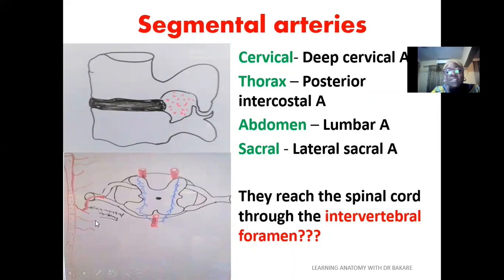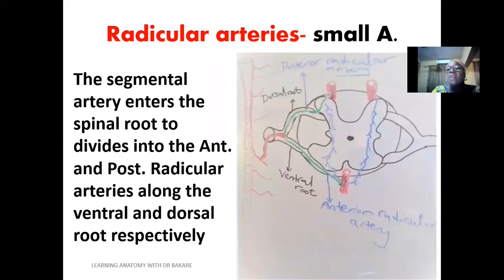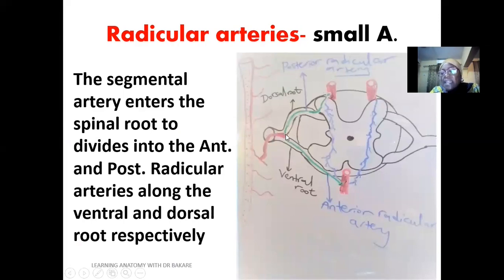The branches emerging from the aorta, depending on the region, give off segmental arteries to supply the spinal cord. They find their way through the intervertebral foramen to reach the vertebral canal. However, they do not directly supply the spinal cord — we have what we call the radicular arteries. The radicular arteries are very small arteries that are sub-branches from the segmental artery. The segmental artery further divides into two: the anterior radicular artery and the posterior radicular artery.